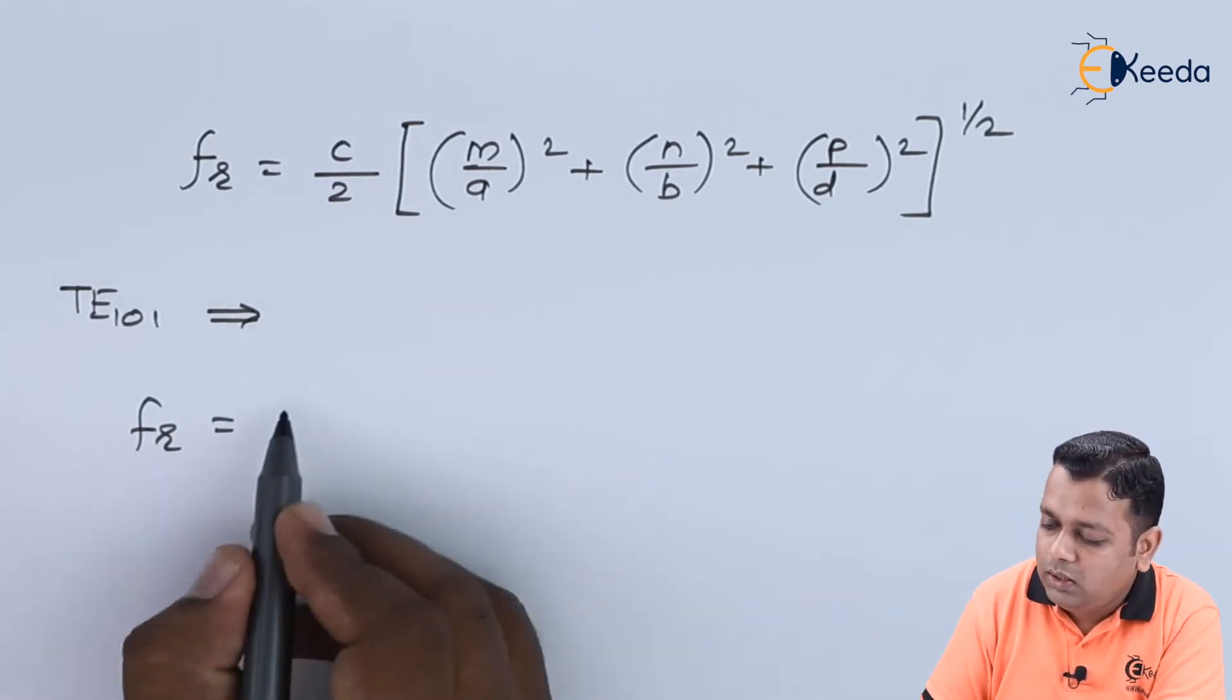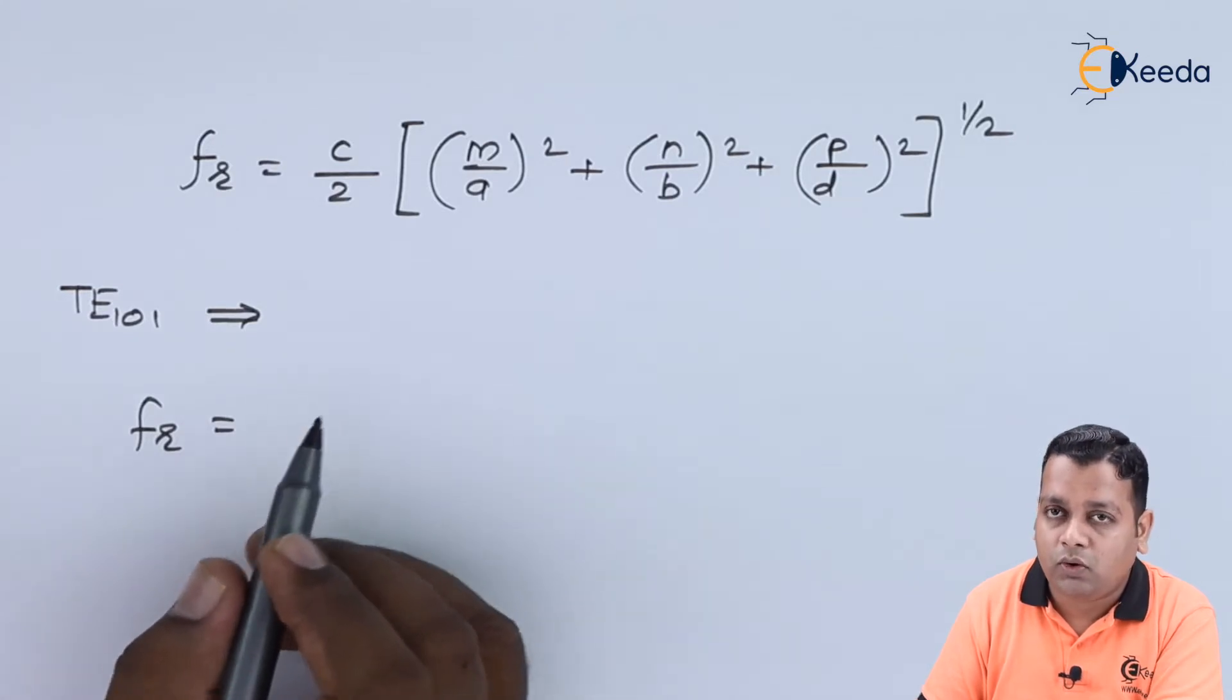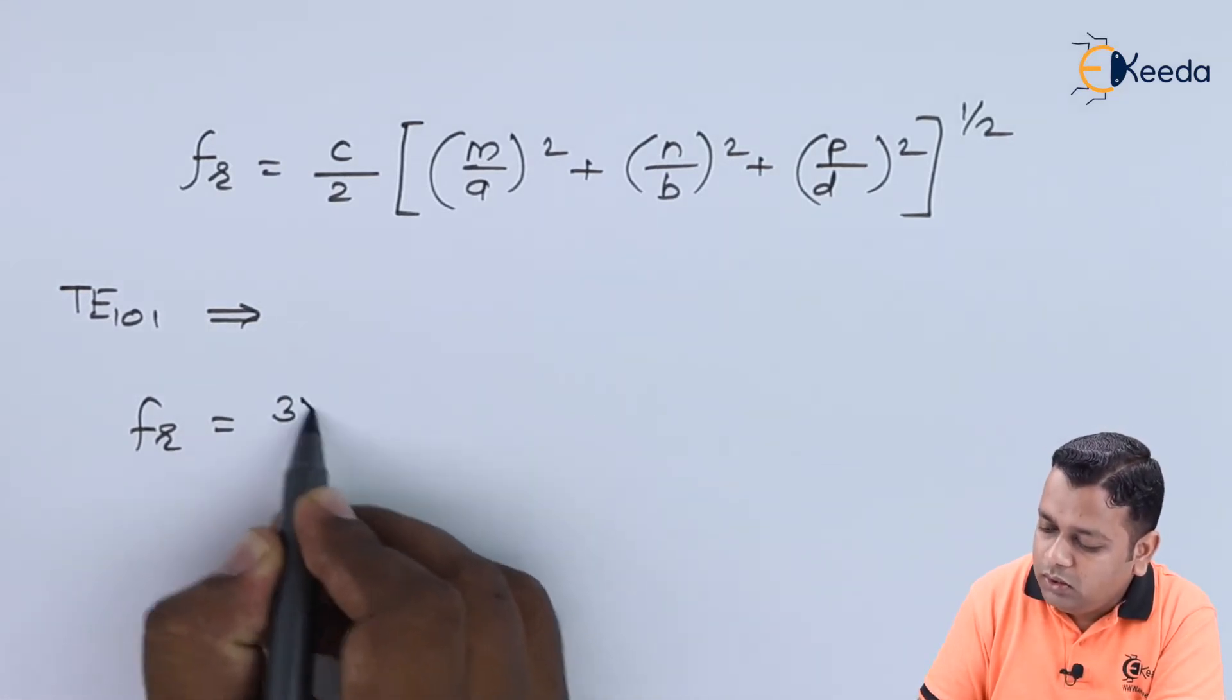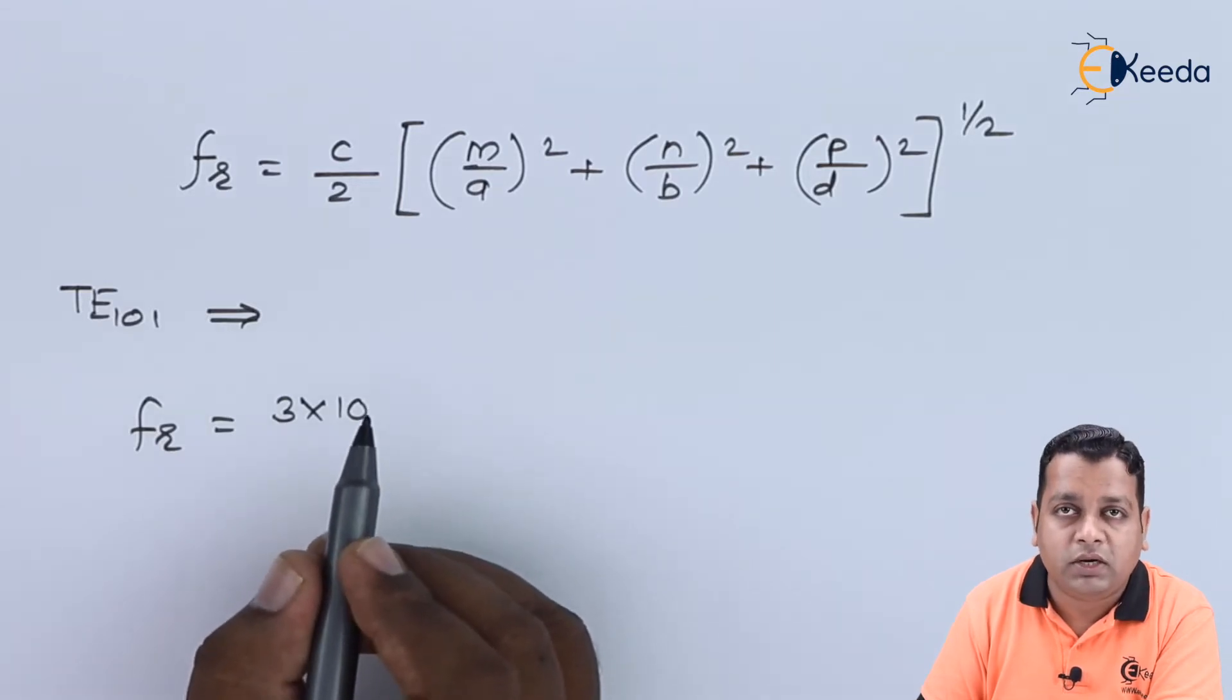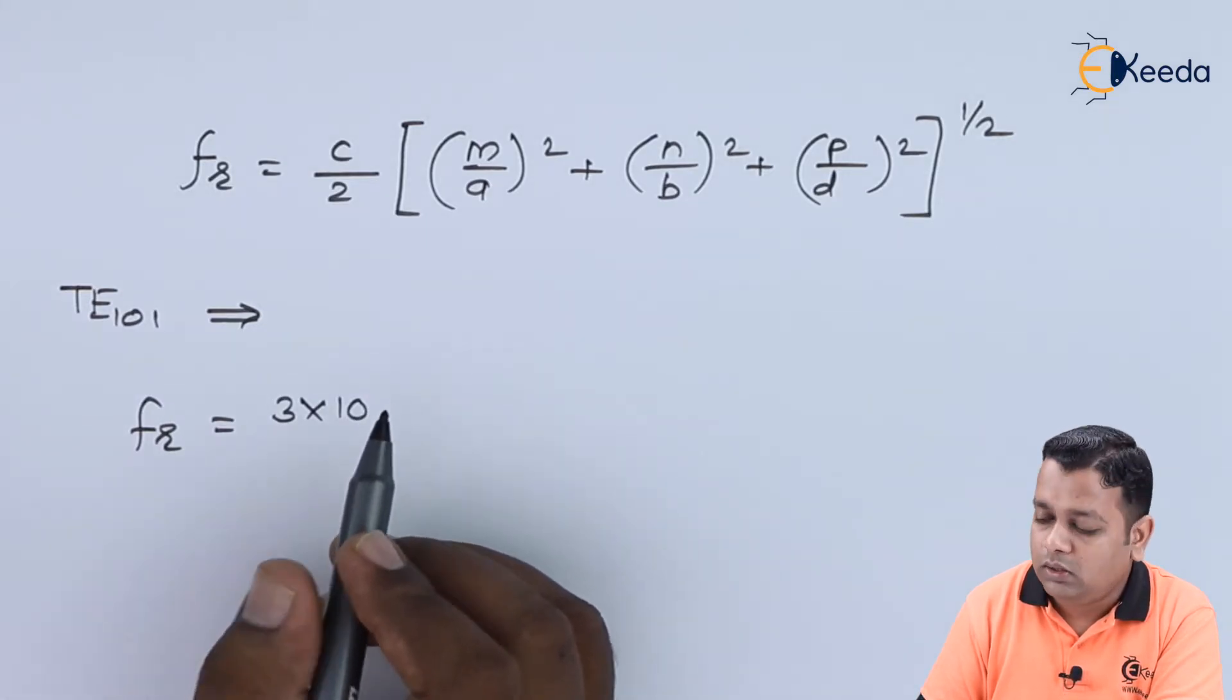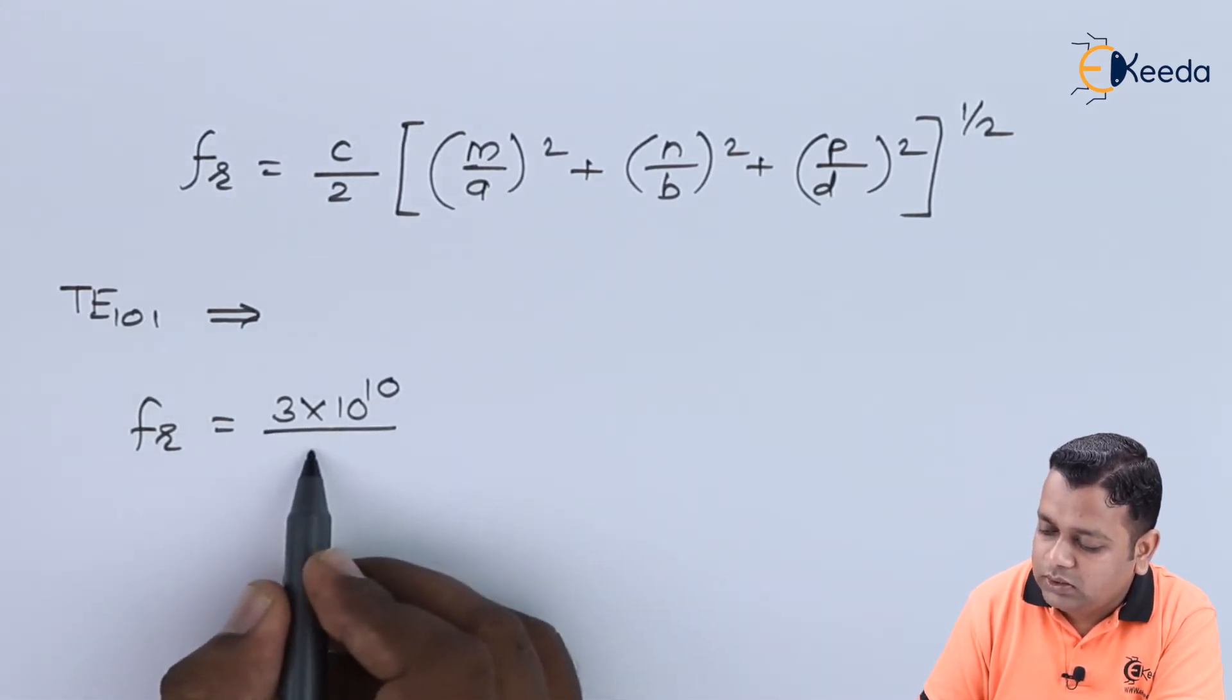C is the velocity of light in vacuum or air, the constant value 3 times 10 raised to power 8 in meters per second. But as the lengths of the rectangular cavity resonator are in centimeters, we put it as 3 times 10 raised to power 10, divided by 2.